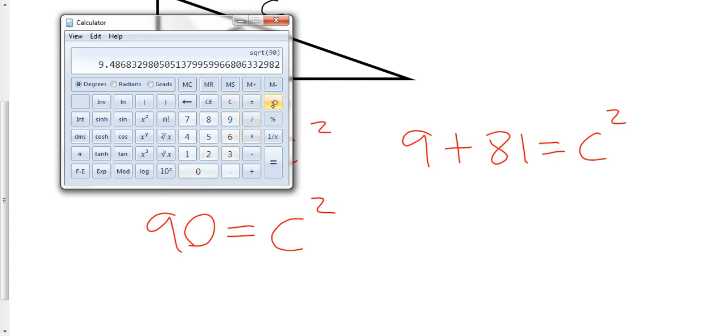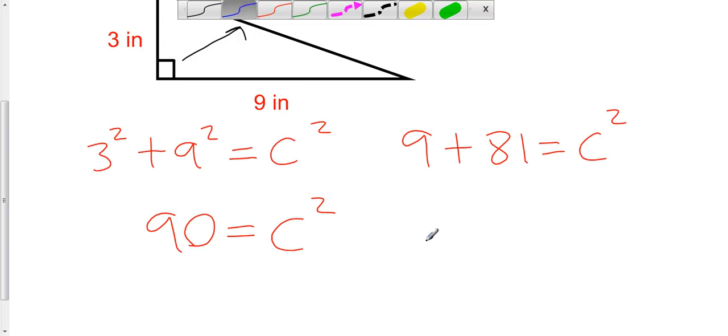And then we're going to take the square root. And it's telling me that it's 9.486. It just keeps going and keeps going and keeps going. And we're asked to round this to the nearest tenth, which means C is going to be 9.5. So here I just say C is equal to 9.5.